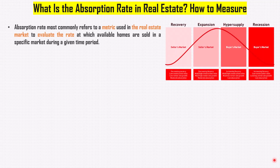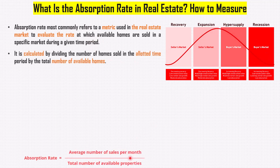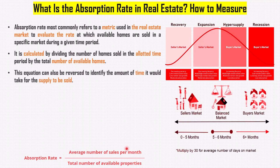Absorption rate most commonly refers to a metric used in the real estate market to evaluate the rate at which available homes are sold in a specific market during a given time period. It is calculated by dividing the number of homes sold in the allotted time period by the total number of available homes. This equation can also be reversed to identify the amount of time it would take for the supply to be sold.